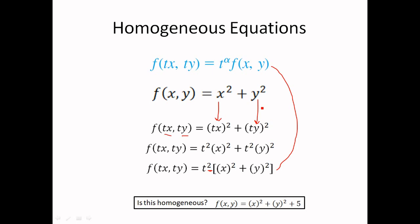Now this function is given to us: f(x, y) = x² + y² + 5. Tell me and post it below the video whether this function is a homogeneous function or not. Think about it.